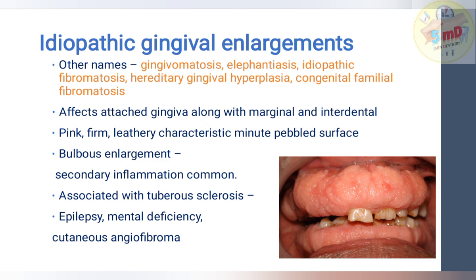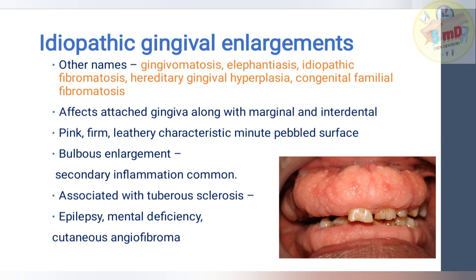Idiopathic gingival enlargement is also known as gingivomatosis, elephantiasis, idiopathic fibromatosis, hereditary gingival hyperplasia, or congenital familial fibromatosis. It affects the attached gingiva along with the marginal and interdental gingiva — no area is spared. It is pink, firm, leathery, with minute pebbled surfaces, and shows bulbous enlargement. It may lead to secondary inflammation. It is associated with tuberous sclerosis, whose triad includes epilepsy, mental deficiency, and cutaneous angiofibroma.